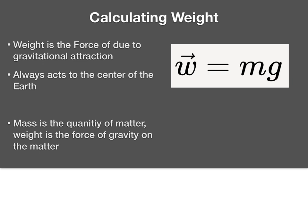First of all, we want to go back to our concept of weight. Weight is the force of gravity, and the key thing is that it is separate from mass. Mass is the quantity of matter — the amount of whatever, in kilograms. It's an intrinsic property. Weight, on the other hand, is the force of gravity on the matter, and weight can change depending on where you are on Earth, what planet you're on, or whether you're near a black hole. But the mass — the amount of matter you have — does not change.